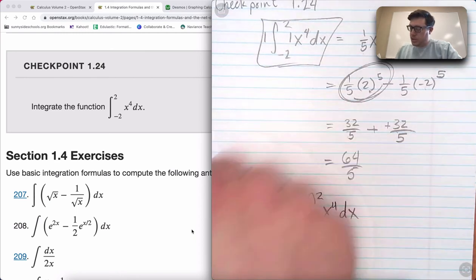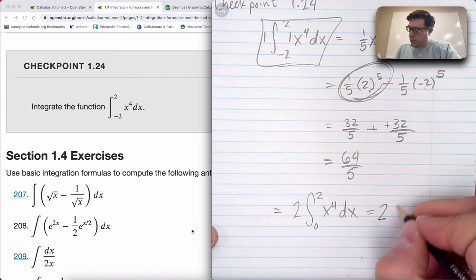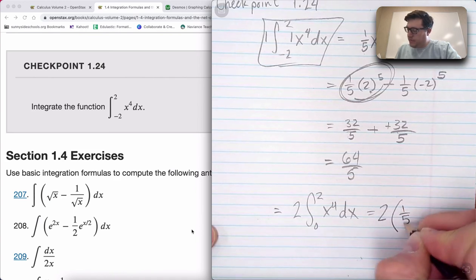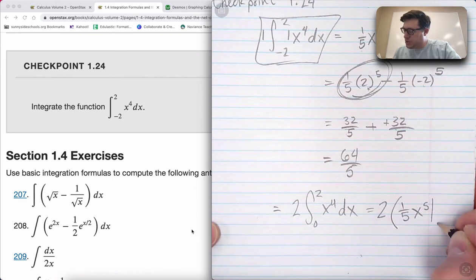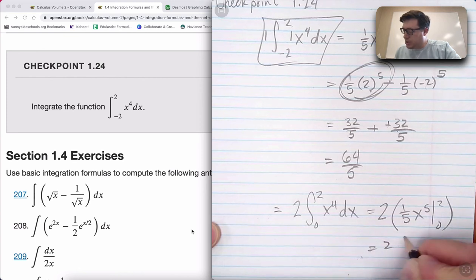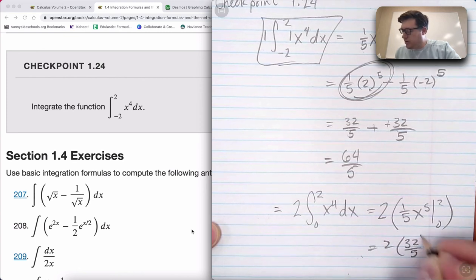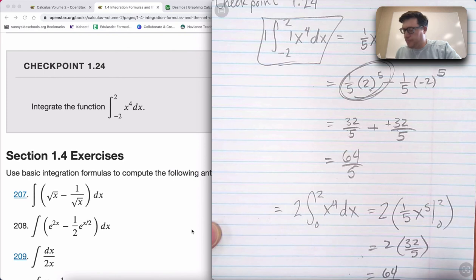Which would once again give us two times one-fifth x to the fifth from zero to two, which is two times 32 over five, which is 64 over five.